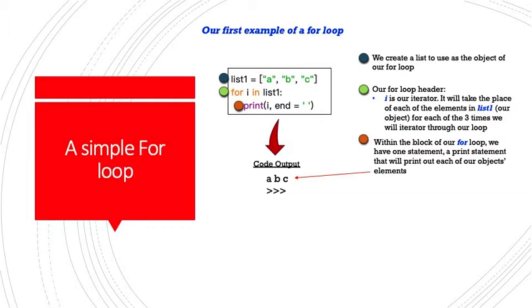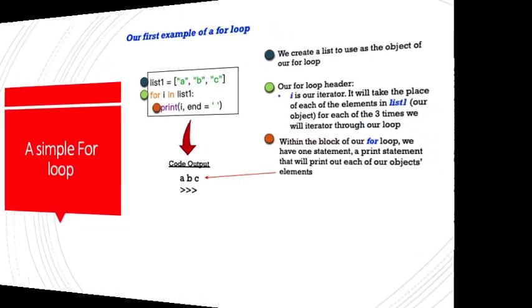Within the block of our for loop, we have one statement, a print statement, that will print out each of our object elements, A, B, and C.